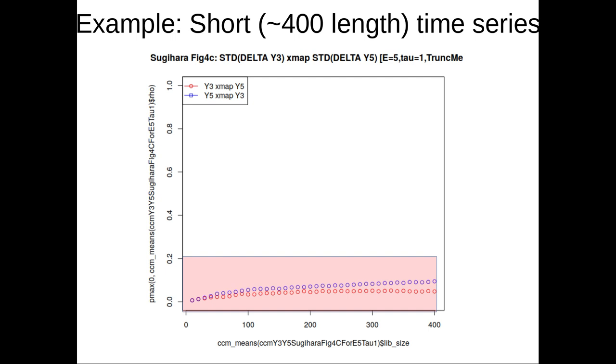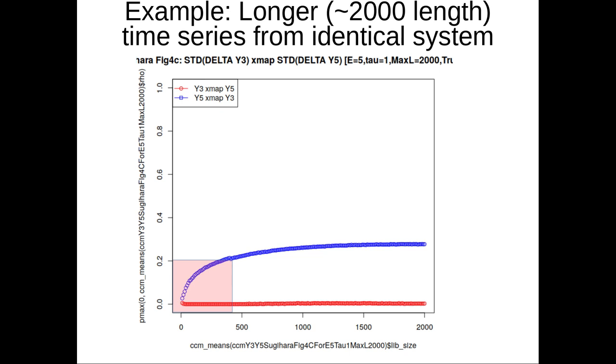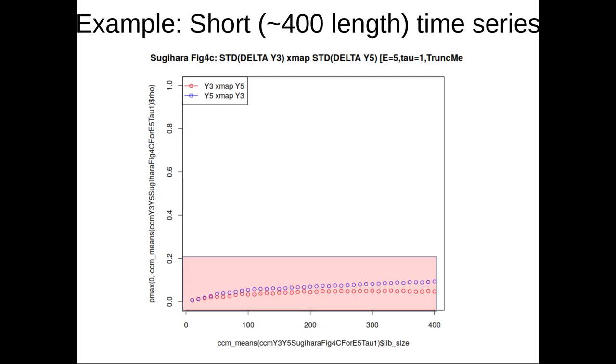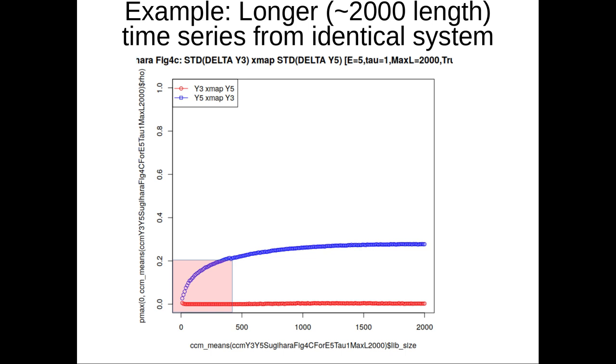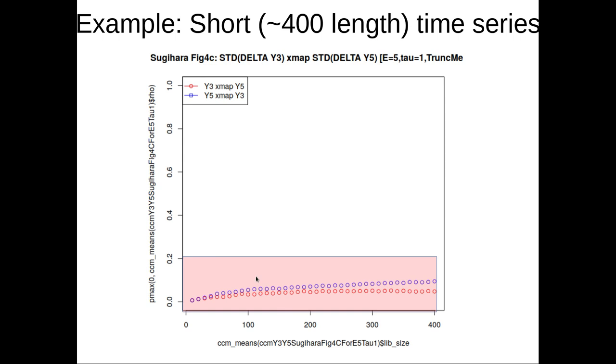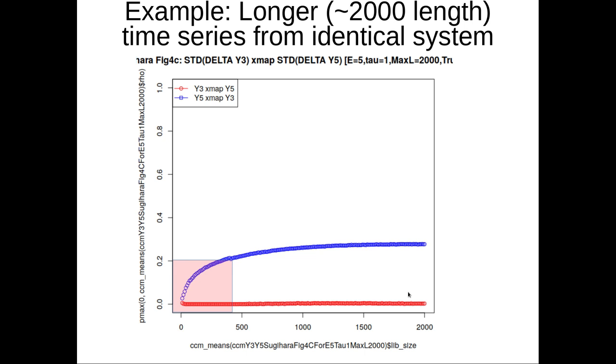For example, here we have a short 400 time series. Identical system with 2,000 length. And you can see a night and day difference. Here, the causal connection Y5 to Y3 doesn't look that much more causal than the other connection. Once you get to a longer time series, it's like night and day. It's just very clear.